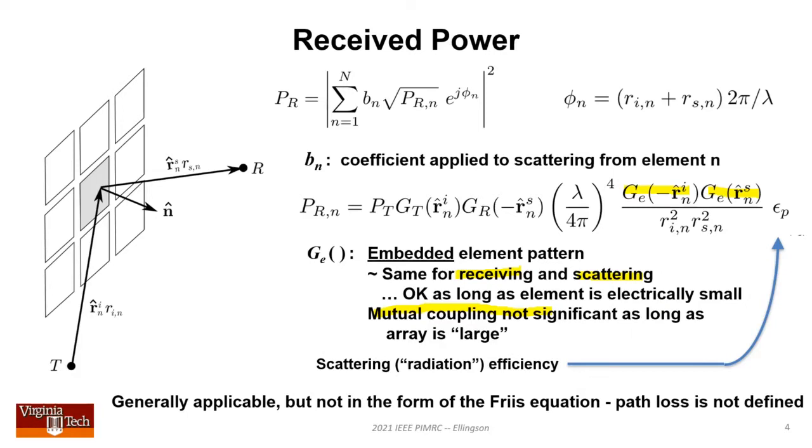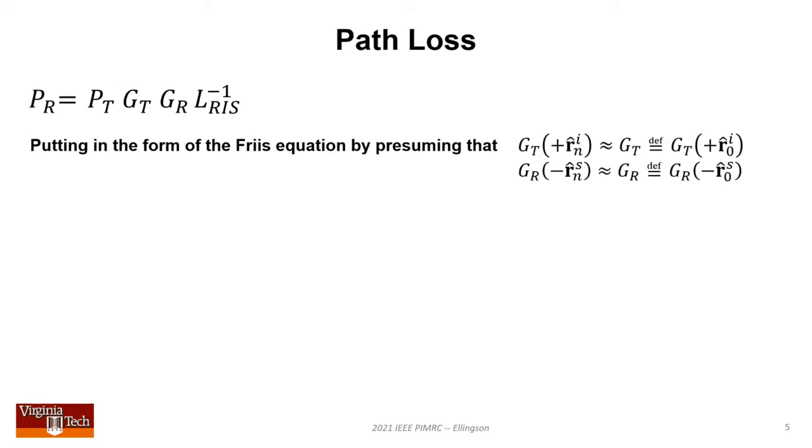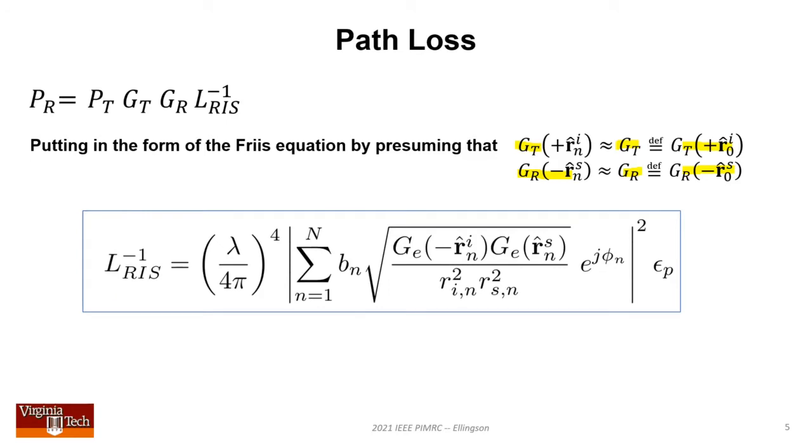To distill this to something like the Friis equation, we make transmitter and receiver gains independent of element index so they can be factored out of the sum. We assume transmit directivities equal a single directivity in a reference direction, and similarly for receive. This is good if the RIS is far from transmitter and receiver, or even close if antenna patterns aren't too narrow. Then path loss is given by this expression.